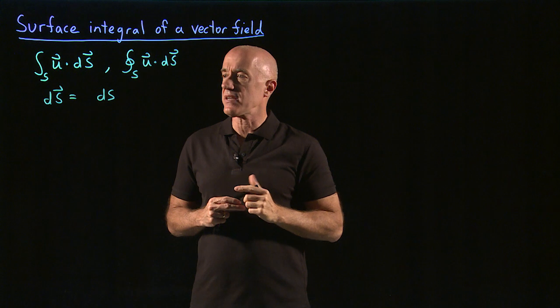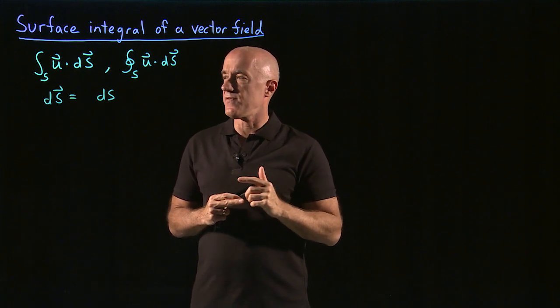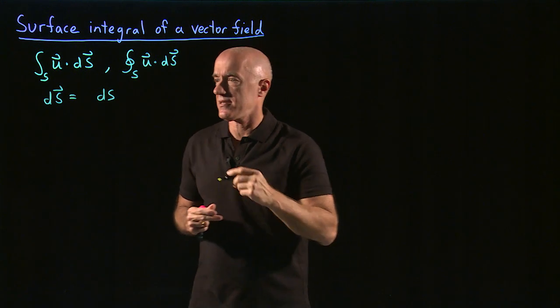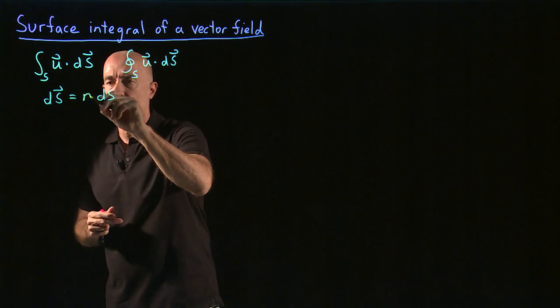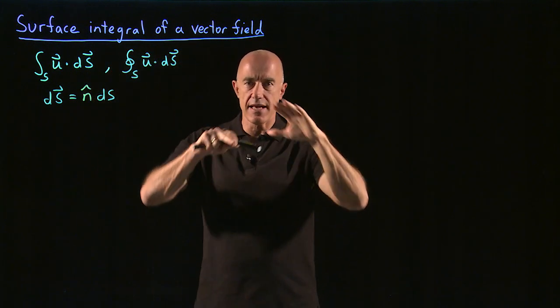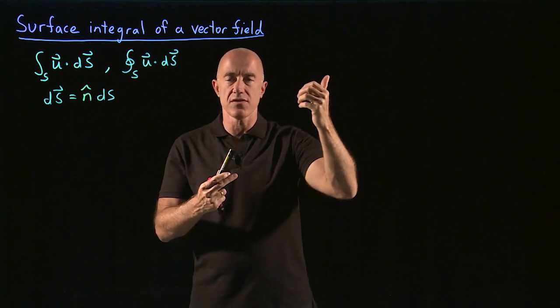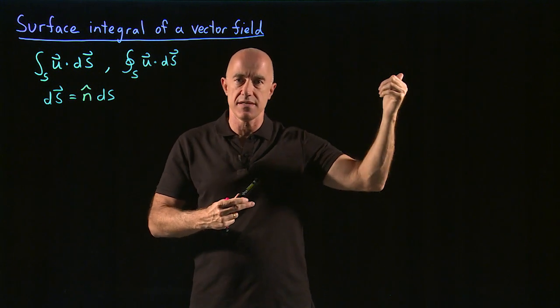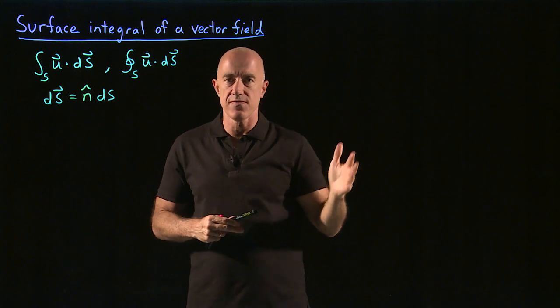But it has to be a vector. So what is the definition of the vector ds? This has a normal vector associated with it. So in the case of a closed surface, the normal vector will be the outward facing normal vector to the surface.